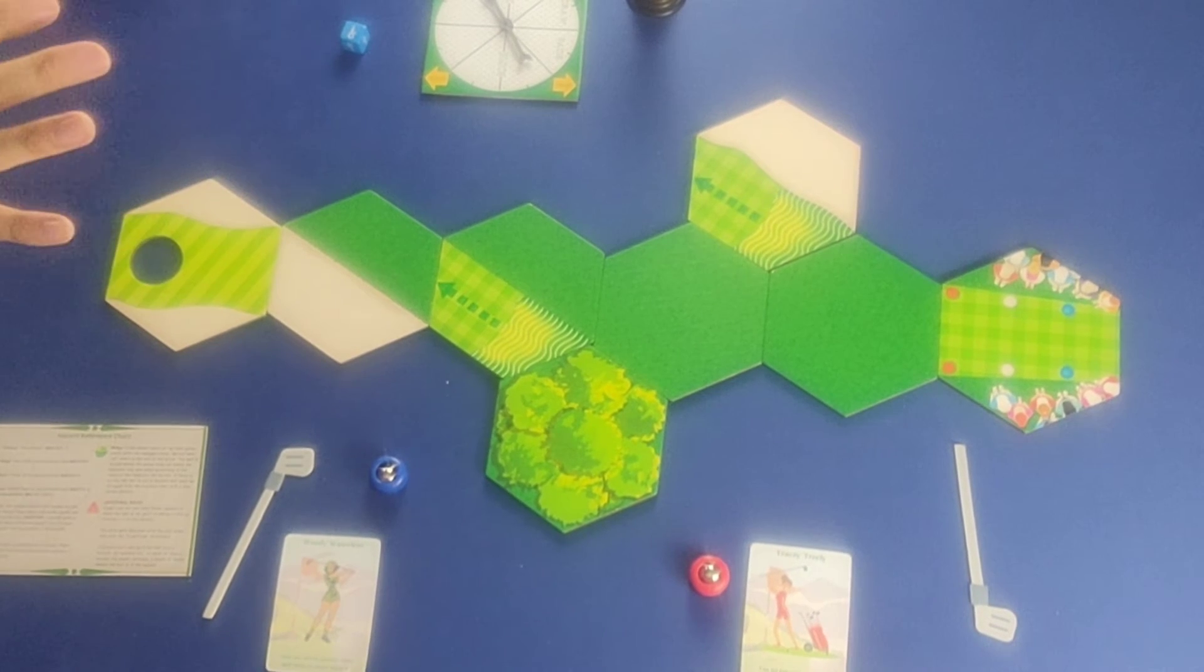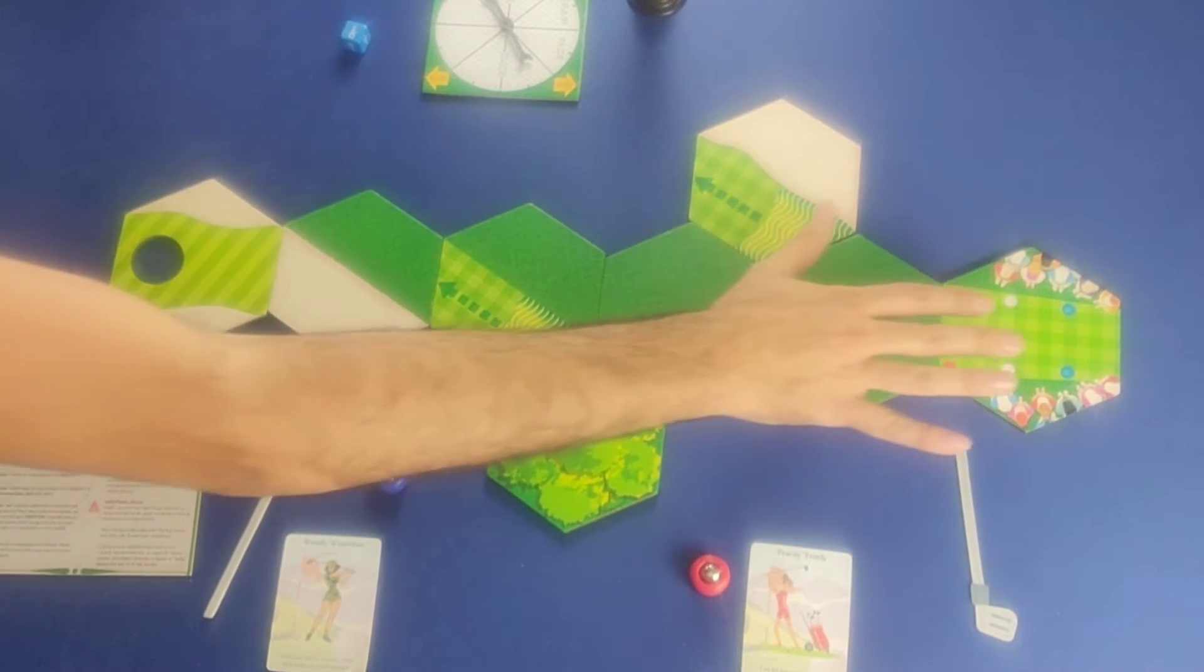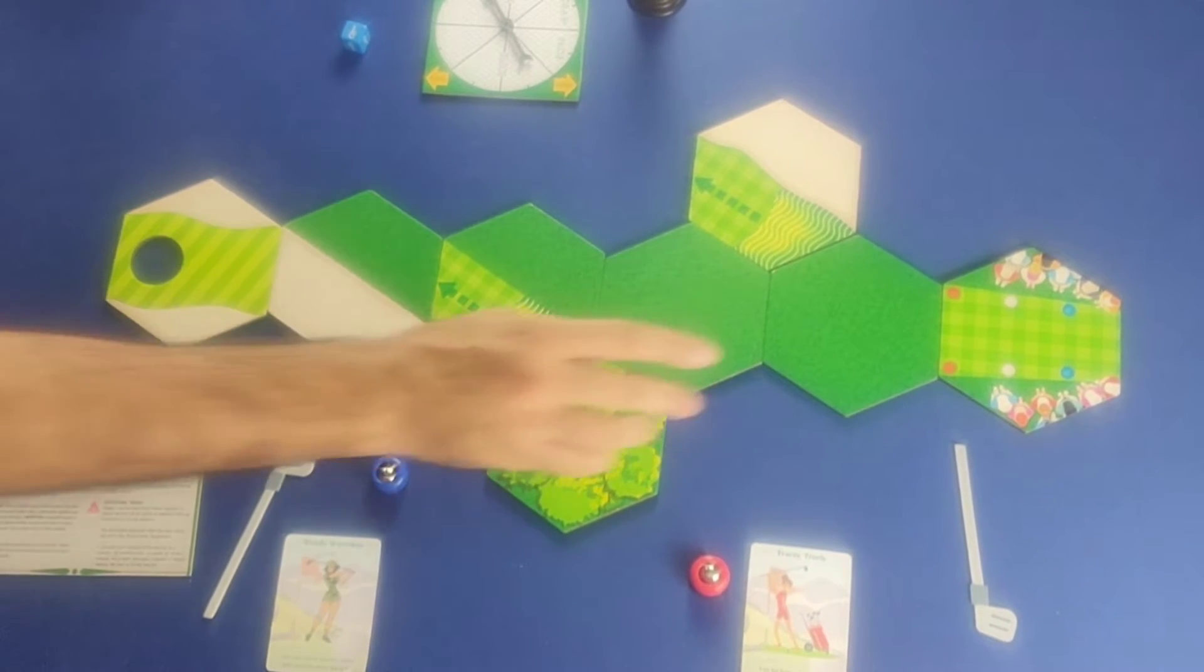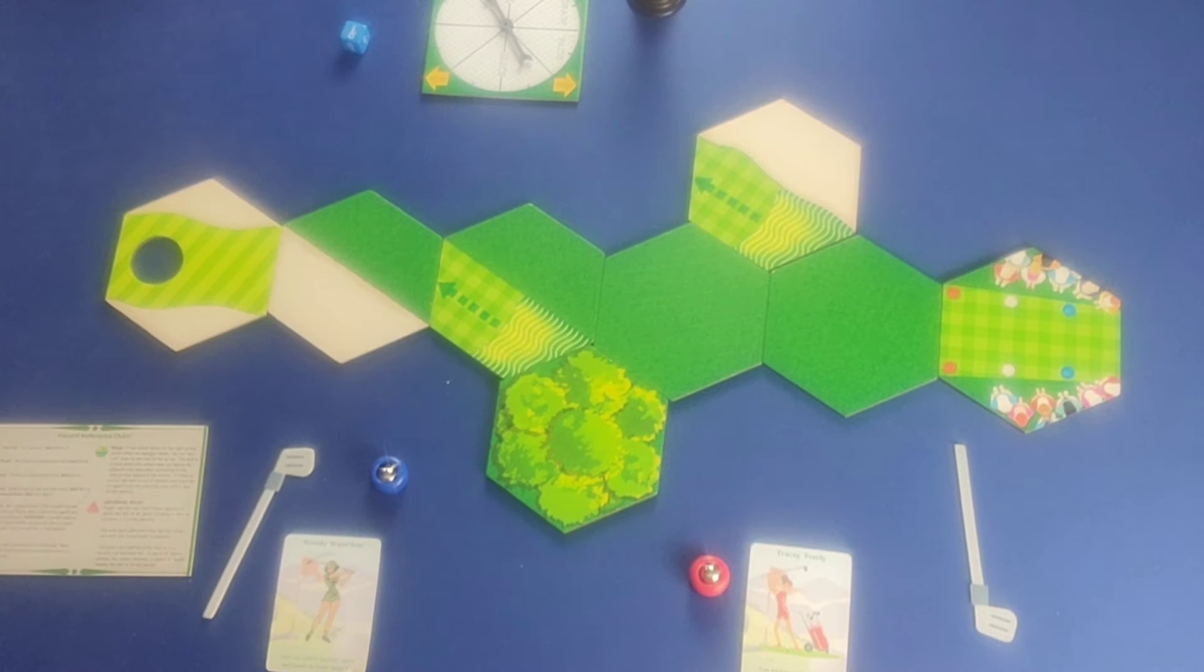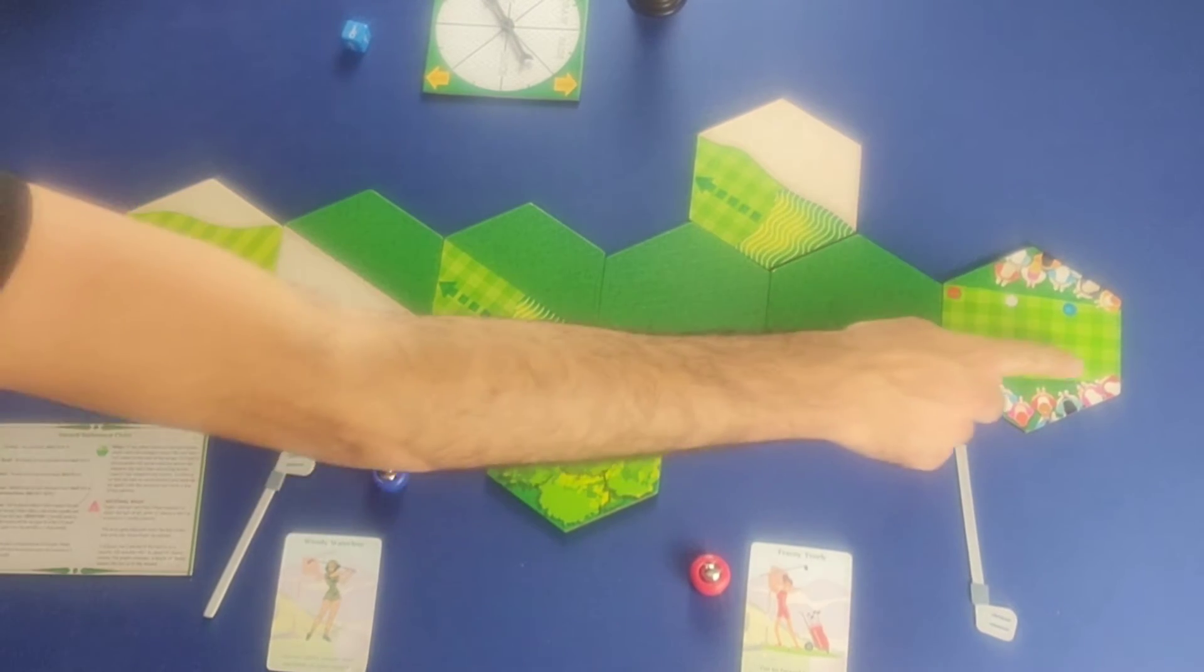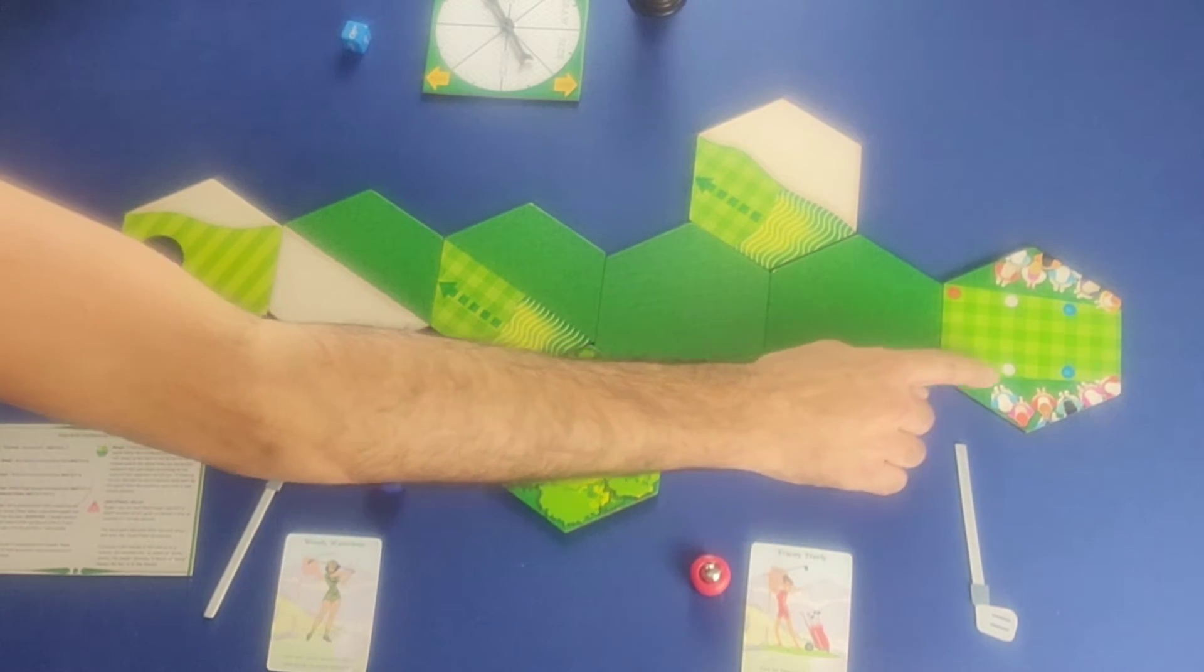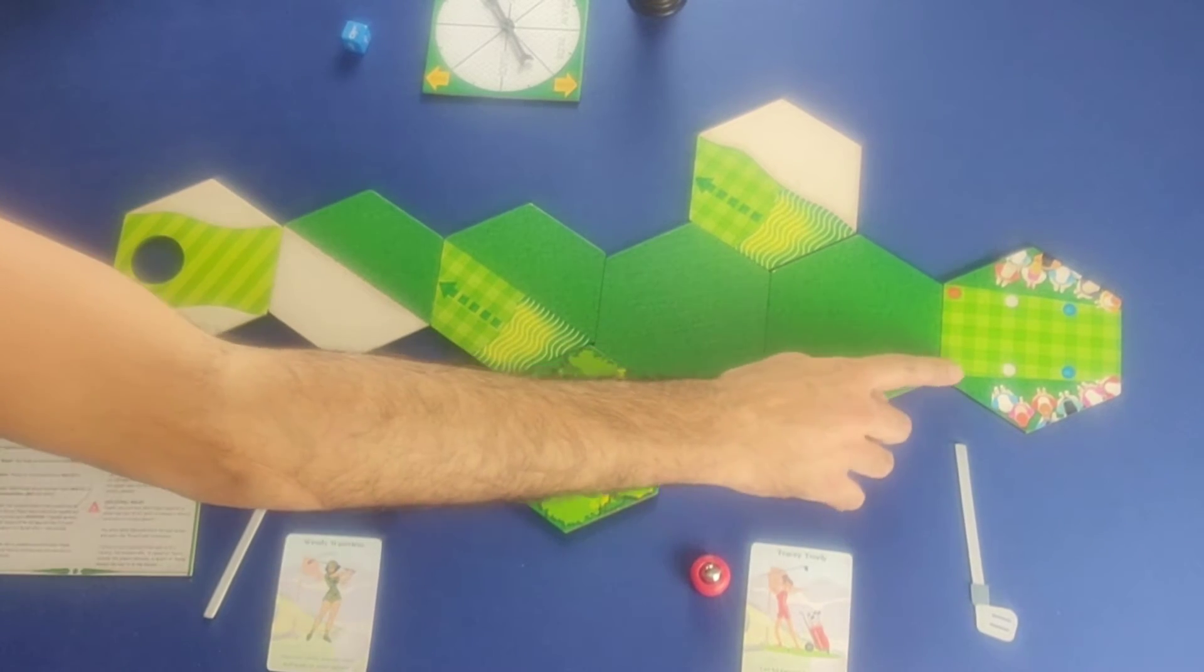And the rules as far as setup are concerned is, first of all, you always need a starting tile and a finishing tile with the hole right here. And you need at minimum five additional tiles in between. So you cannot play with any fewer than seven tiles per golf course. Now the player who created the golf course here in the tee box, they're going to determine where the starting spot will be.